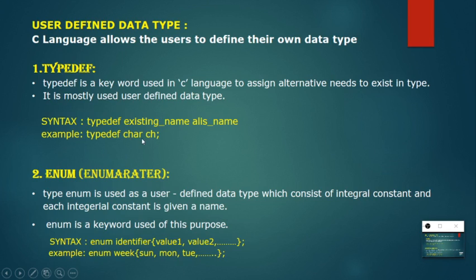We can also have enum — enumerator. In short we use the keyword enum, and it is also a user-defined data type. We can create our own data type using enum. The syntax is: enum space identifier { value1, value2, ... }. A best example: enum week { Sunday, Monday, Tuesday, ... } and so on.